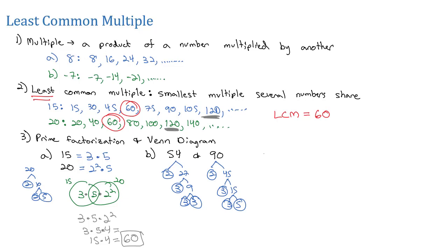And so then when we move to our Venn diagram for the 54 and the 90, what I see is they both have a 2 in common, and they both have a 3 in common. In fact, they both have another 3 in common, so I'll say that's 3 squared.